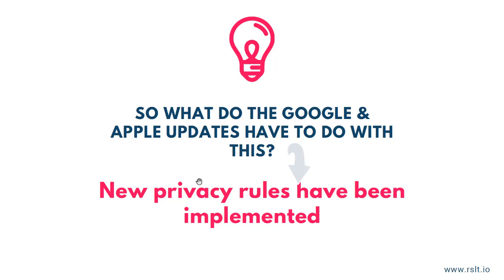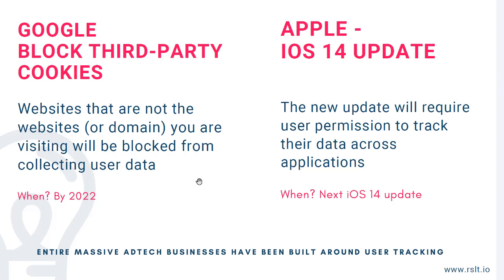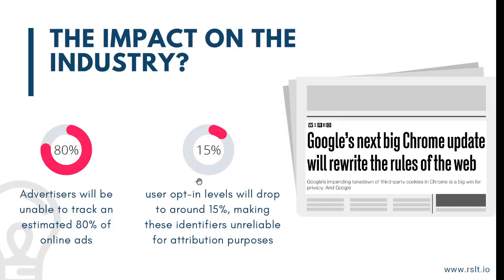So, what do the Google and Apple updates have to do with it? We now have new privacy rules that have been implemented. By 2022, Google will block third-party cookies, meaning analytics platforms that utilize these trackers will be blocked from collecting user data. Apple also implemented drastic changes — they are limiting IDFAs, short for identifiers for advertising, by clearly asking the user's consent to be tracked. We believe the number of opt-outs will increase drastically. Advertisers will be unable to track an estimated 80% of online ads, and user-level opt-in will decrease to around 15%, meaning all identifiers used for attribution purposes will become unreliable.